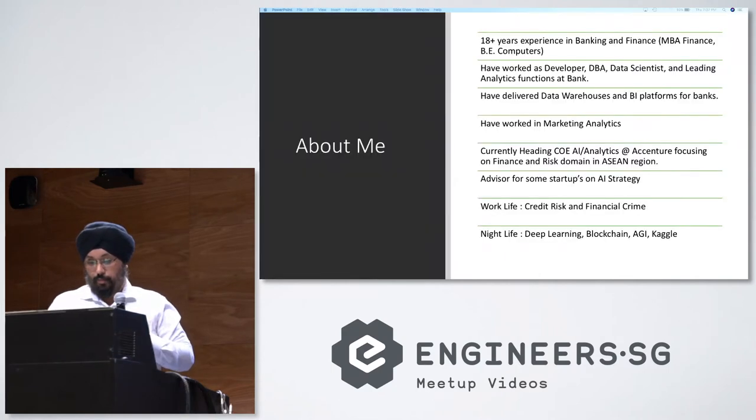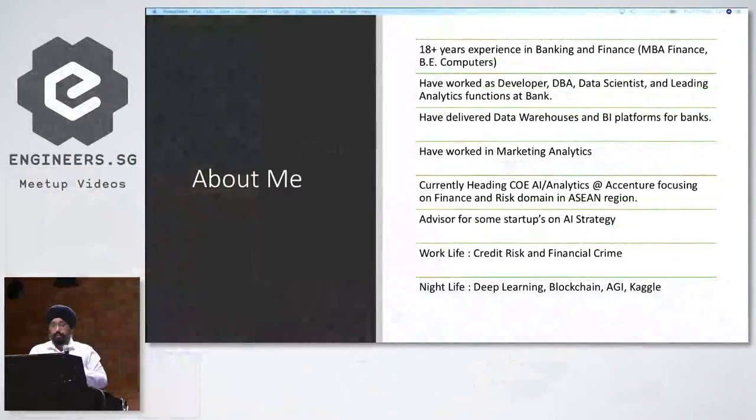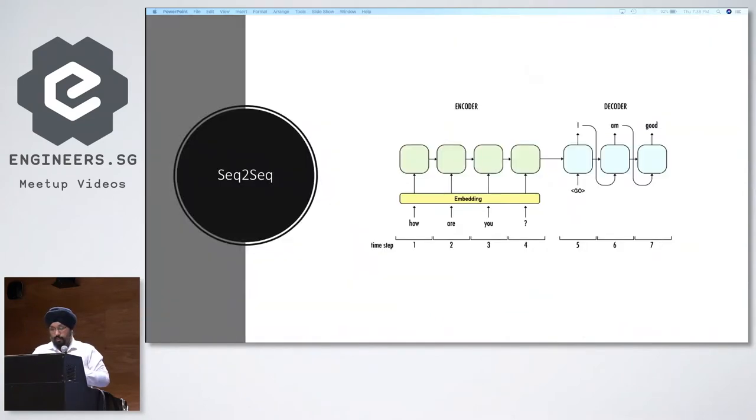Before I begin, a brief introduction about myself. I have a background in finance and banking. I started as a developer, worked as a data scientist for some time, then I started leading teams for analytics. Recently, I'm working at Accenture right now, heading a center of excellence for AI and advanced analytics focusing on finance and risk domain. I'm also advisor for some startups on their AI strategy. On my work side, I work basically on credit risk and financial crime and how to use AI on that. On my nightlife, I read about deep learning and I'm learning blockchain, AGI. I compete on Kaggle occasionally. So let's go to the talk now.